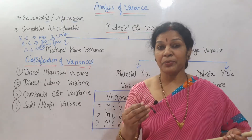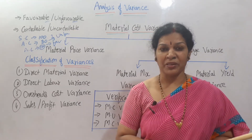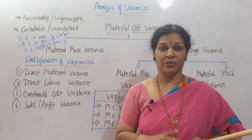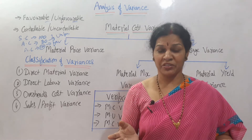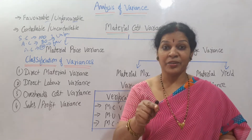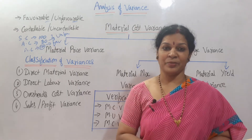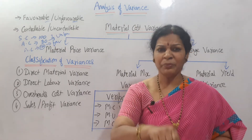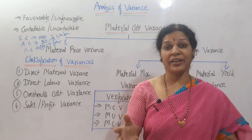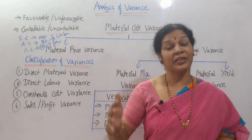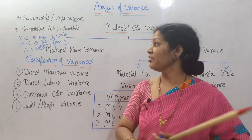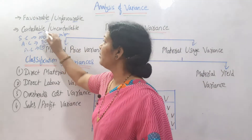For labor, if labor hours are not utilized properly and wages paid are more than the standard wages, that is a waste of money — making it an uncontrollable expense. Controllable expenses also depend on material and labor. If material, labor, and overheads — these three — can be managed together, everything becomes controllable and you can control costs.